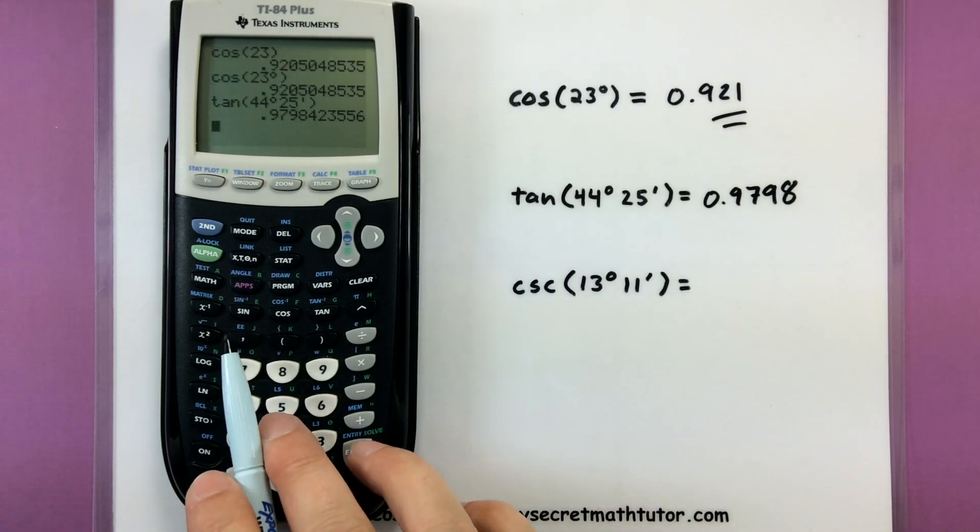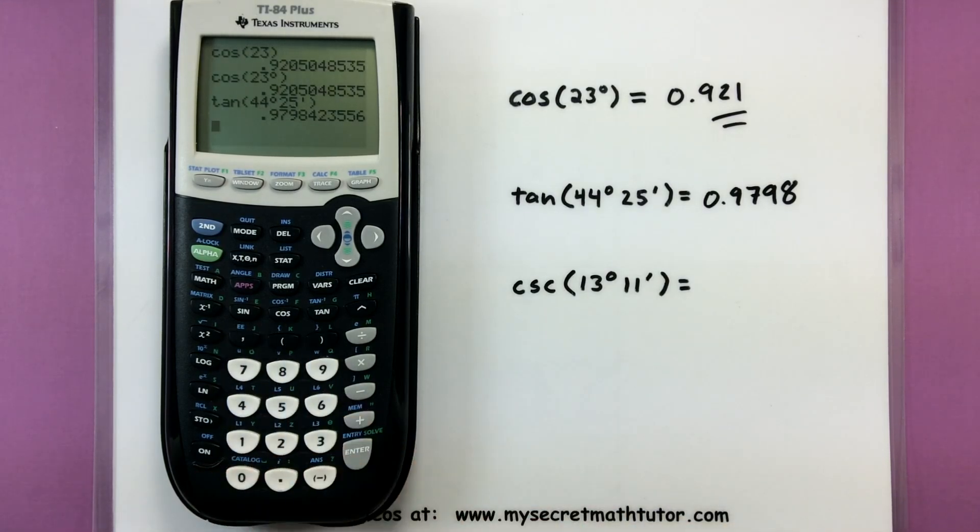Now you'll notice on many calculators we usually only have sine, cosine, and tangent. And you can figure out the values of the other trigonometric functions but you have to know how they're related to sine, cosine, and tangent in order to do this.